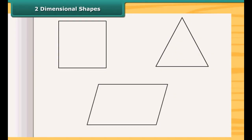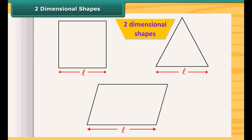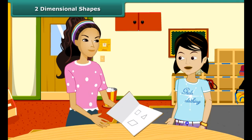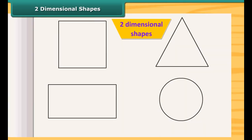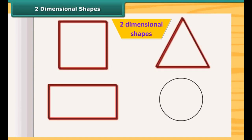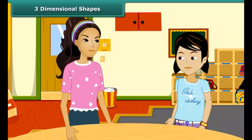Look at these shapes. These are all two-dimensional shapes. They have only two measurements: length and breadth. You mean all the shapes that we draw in our notebook are two-dimensional? Yes, you are right. All those shapes that we can draw on paper and which have only two measurements are two-dimensional shapes. A square, rectangle, triangle, circle, etc. are the examples of two-dimensional shapes.